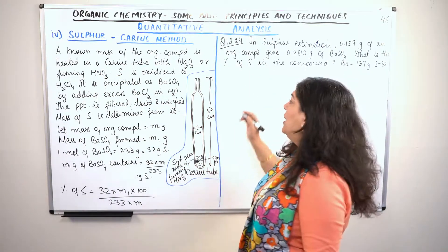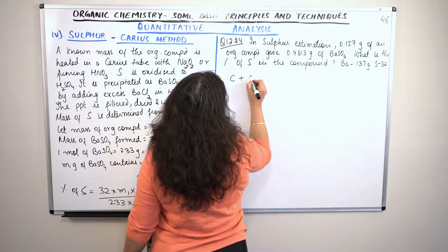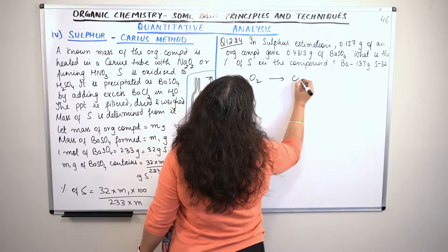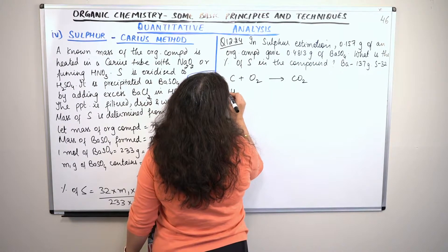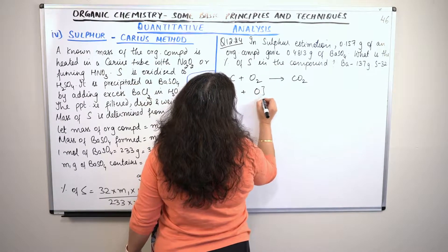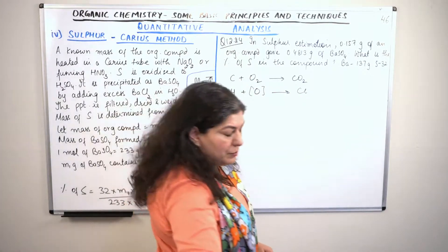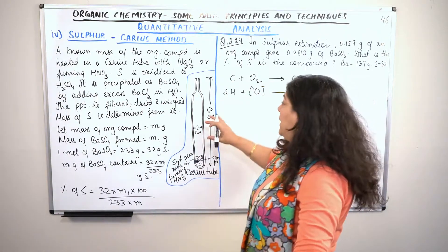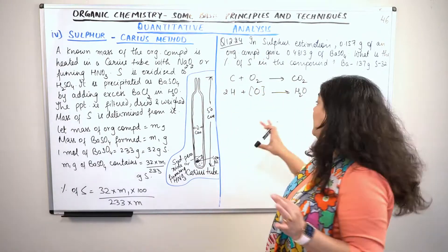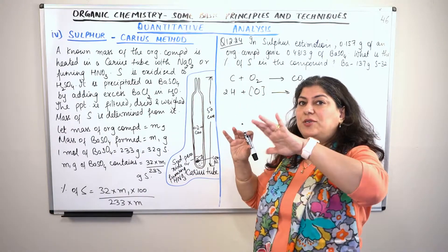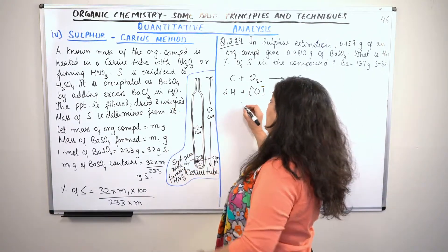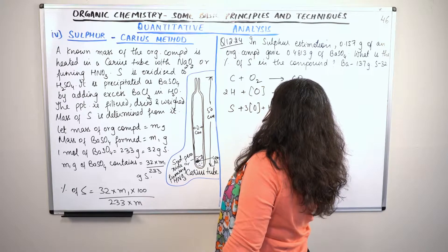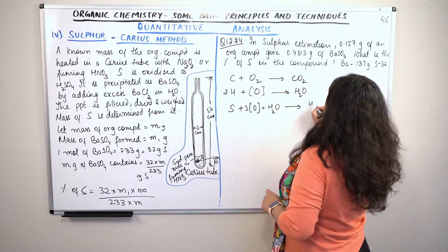When you use an oxidizing agent, if carbon is present in the compound, carbon will combine with oxygen from the nitric acid or sodium peroxide to create carbon dioxide. Hydrogen present will react with nascent oxygen to create water. If sulfur is present, sulfur will also combine with nascent oxygen and react with water to get oxidized to H₂SO₄.